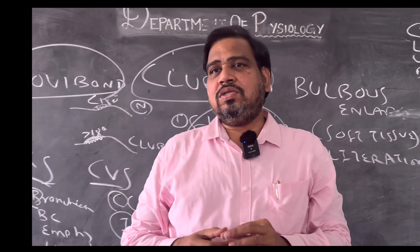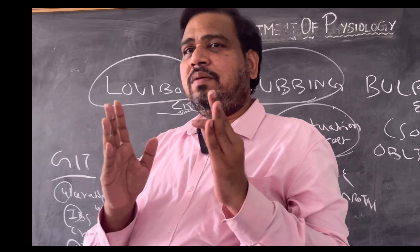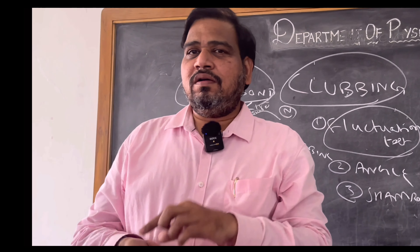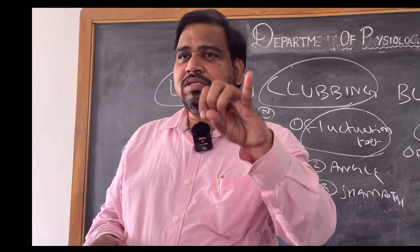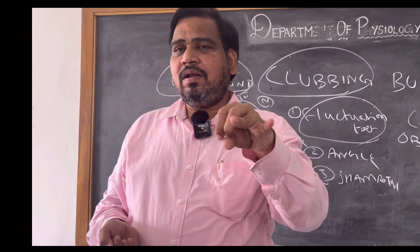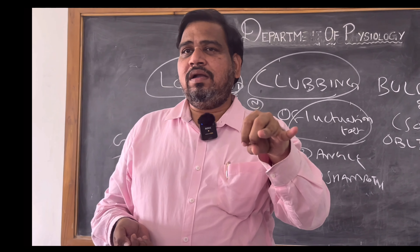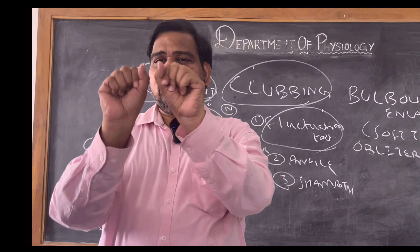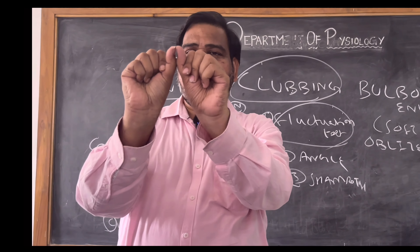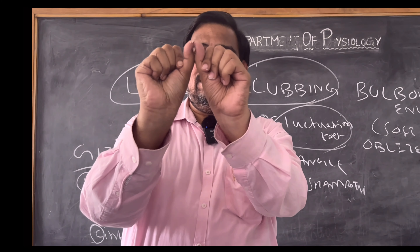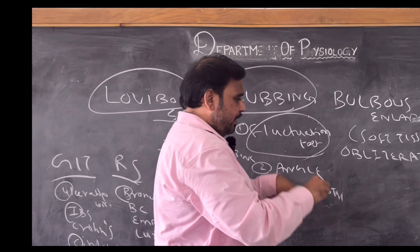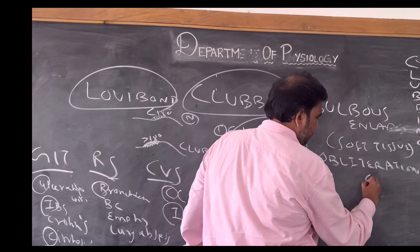In today's video, we saw about what is clubbing, how to check clubbing — the fluctuation test, obliteration of the angle between the nail and nail bed, and Schamroth sign. You can see my fingers — there is a gap, so I am not having clubbing. Finally, grades of clubbing — there are totally 4 grades.